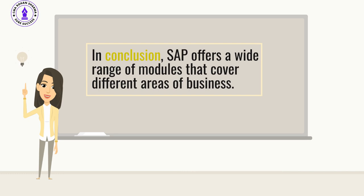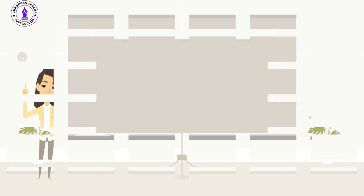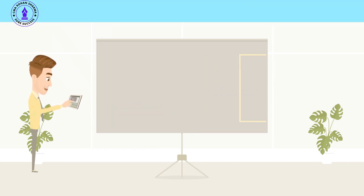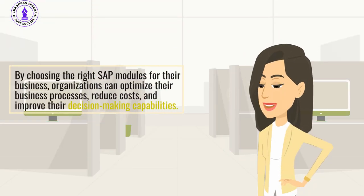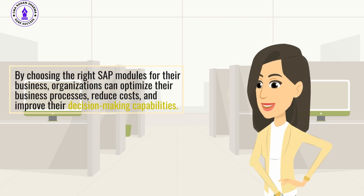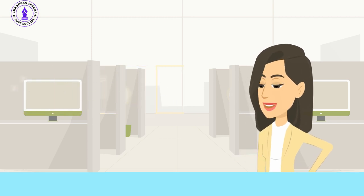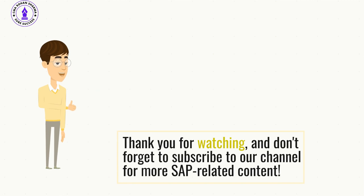In conclusion, SAP offers a wide range of modules that cover different areas of business. Each module provides specific functionalities and features to manage different business processes. By choosing the right SAP modules for their business, organizations can optimize their business processes, reduce costs, and improve their decision-making capabilities. Thank you for watching, and don't forget to subscribe to our channel for more SAP-related content.